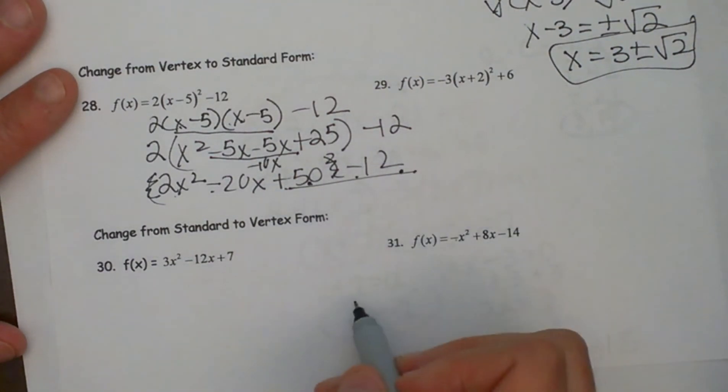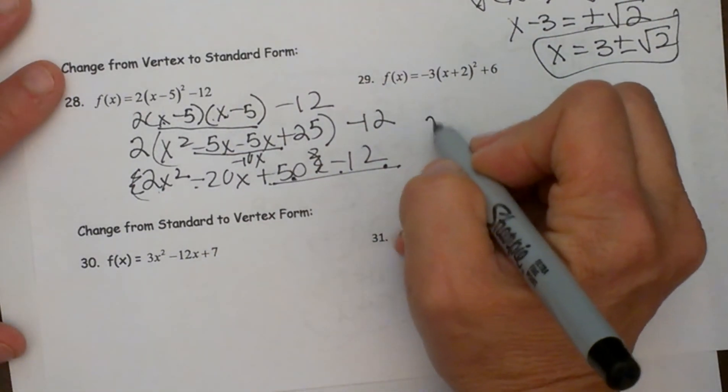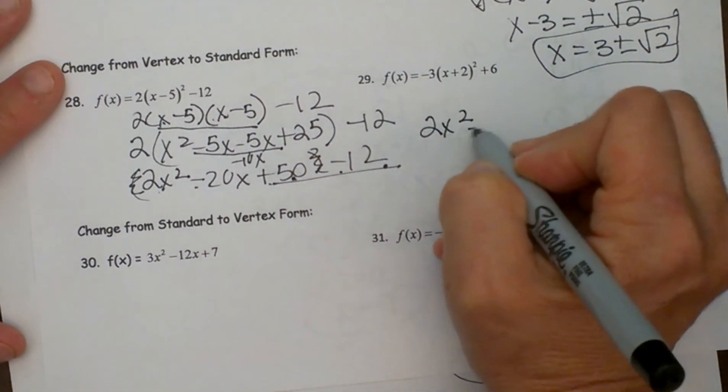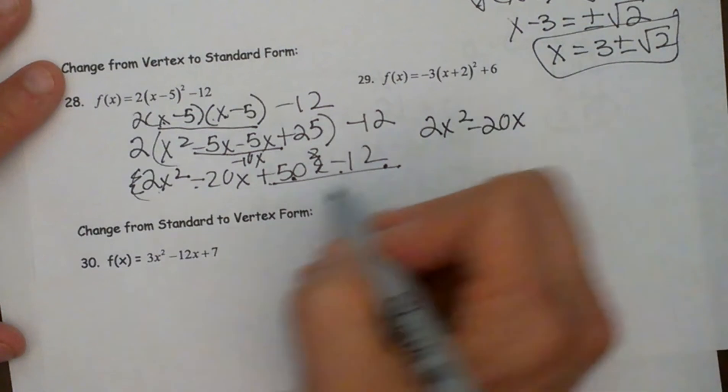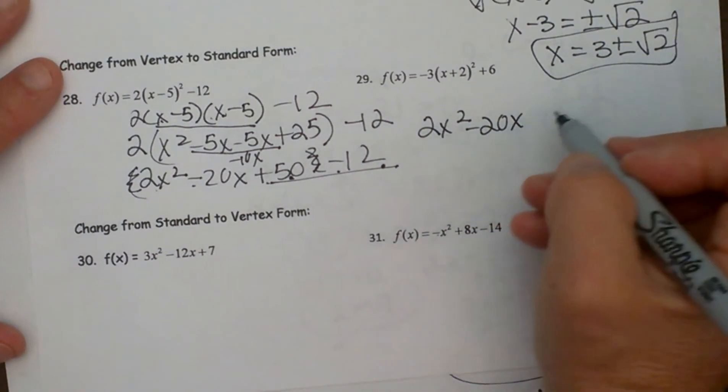The last thing I have to do is combine the 50 and the 12. So let's bring over 2x squared minus 20x and then positive 50 minus 12 is what? Positive 38.